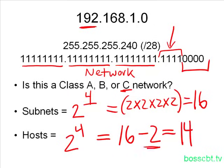Don't forget, the minus 2, we're subtracting the network number and the broadcast number in order to find the number of valid hosts. So that's it. We've determined that by using this subnet mask, we can create 16 different subnets, and each subnet is going to have 14 valid hosts.